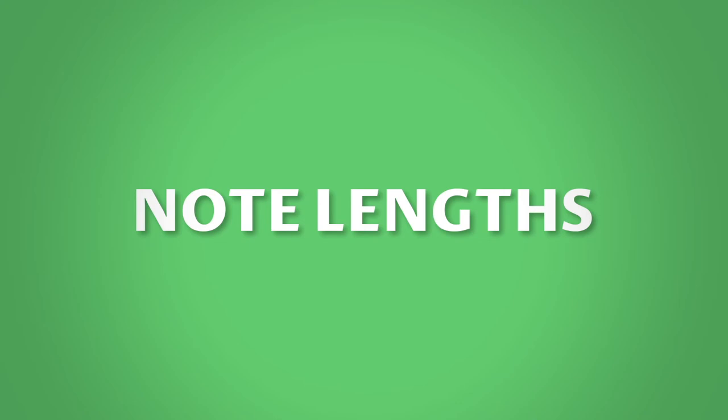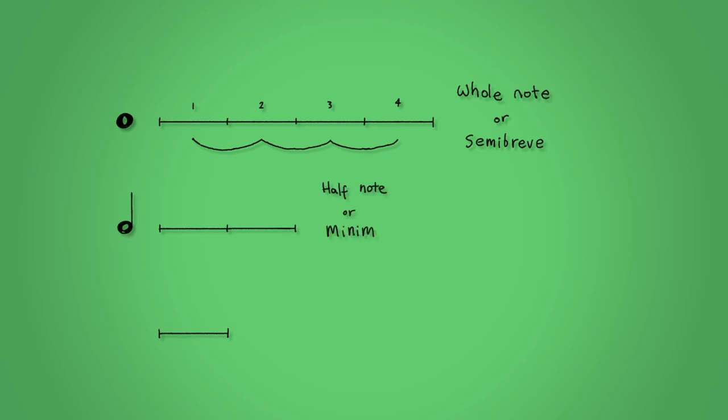Note lengths. How can you tell the length of a note? Well that's easy. The shape of the note tells you how long to play it. A whole note, or if you're in the UK called a semi-breve, is an empty circle and lasts four counts. A half note or a minim adds a stem and lasts two counts. And lastly, a quarter note or a crotchet fills in the circle and lasts one count.